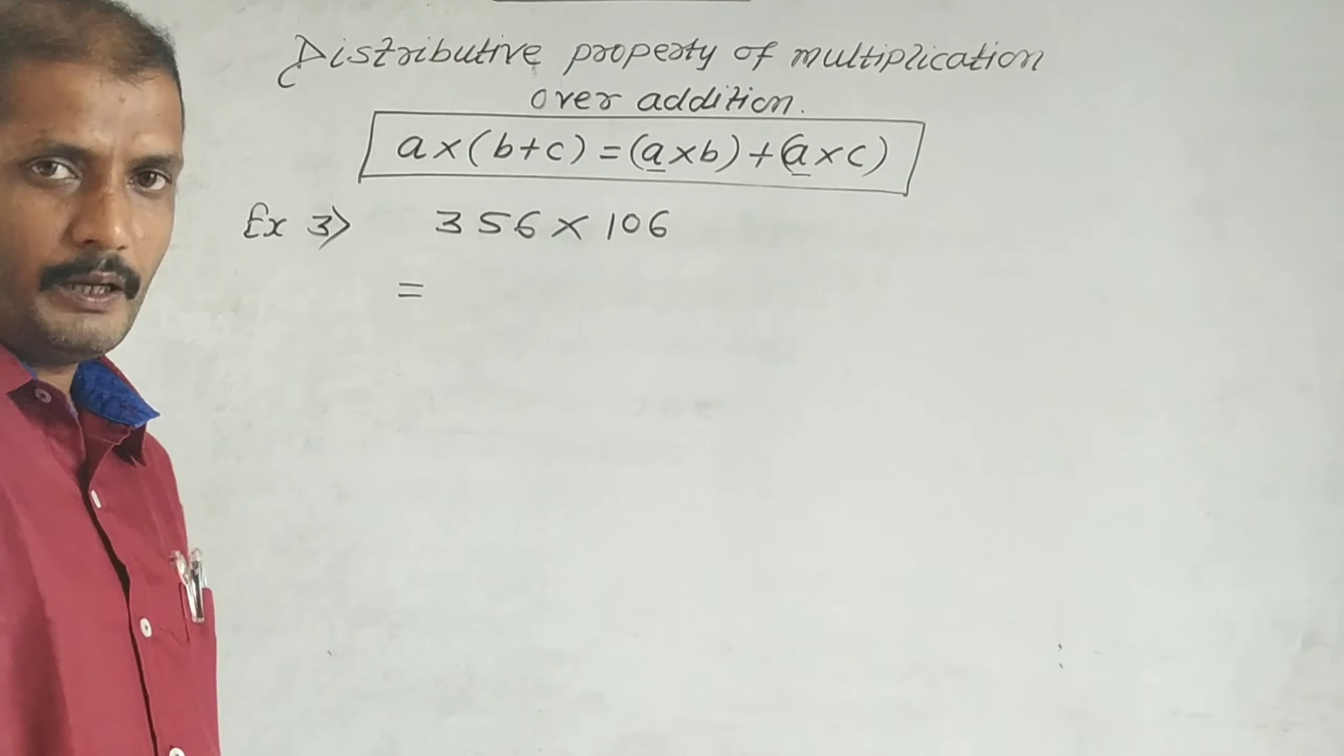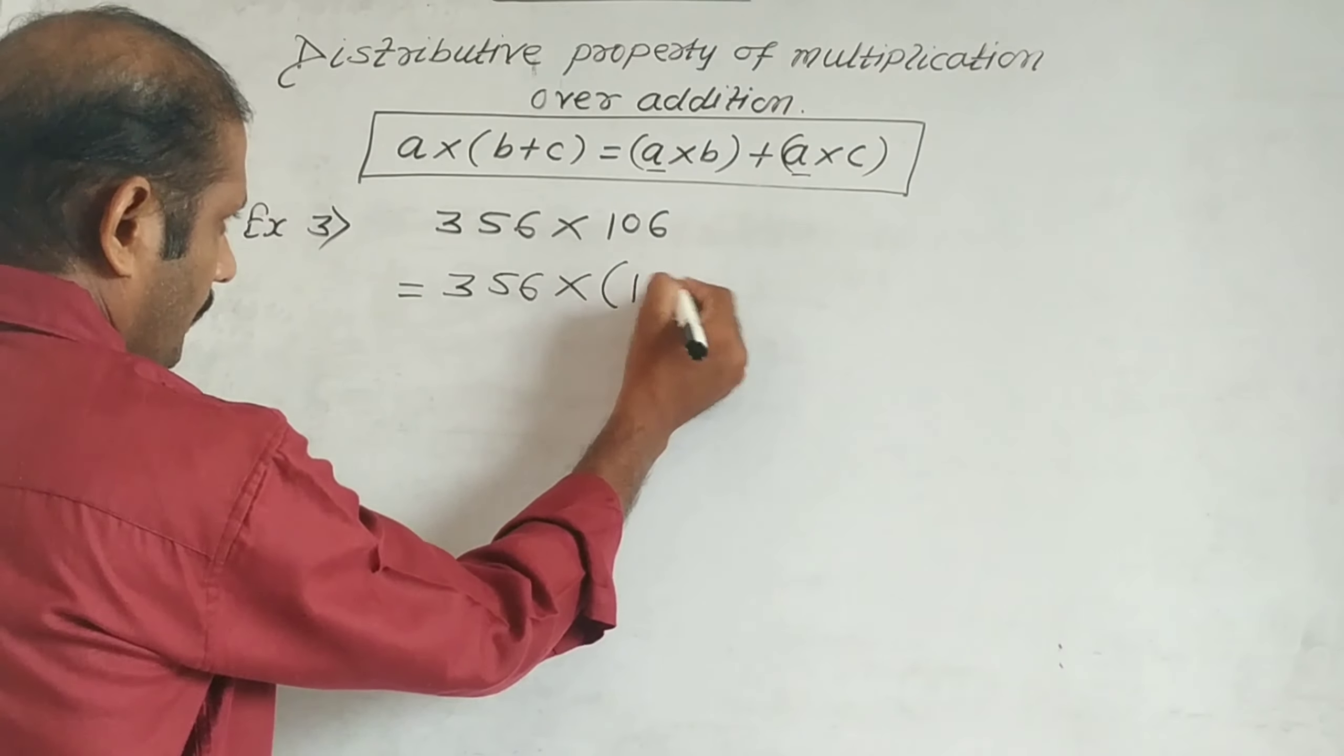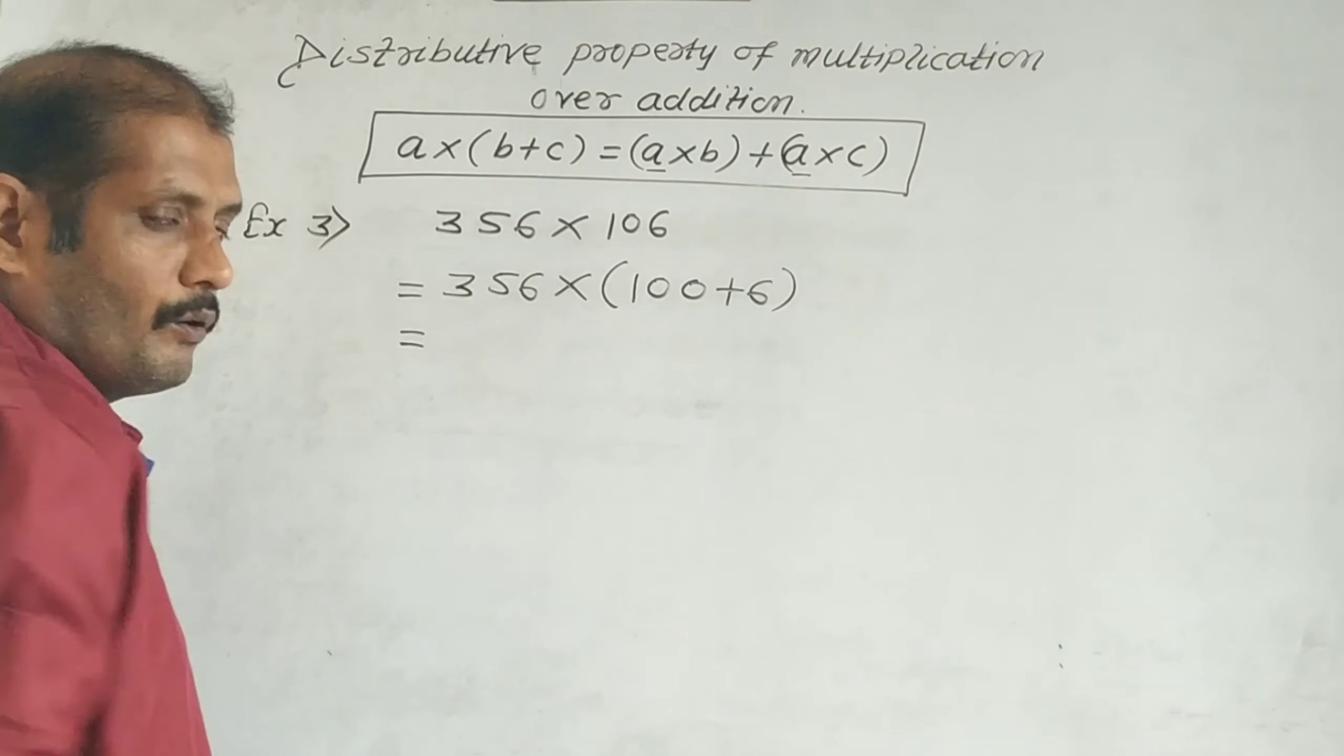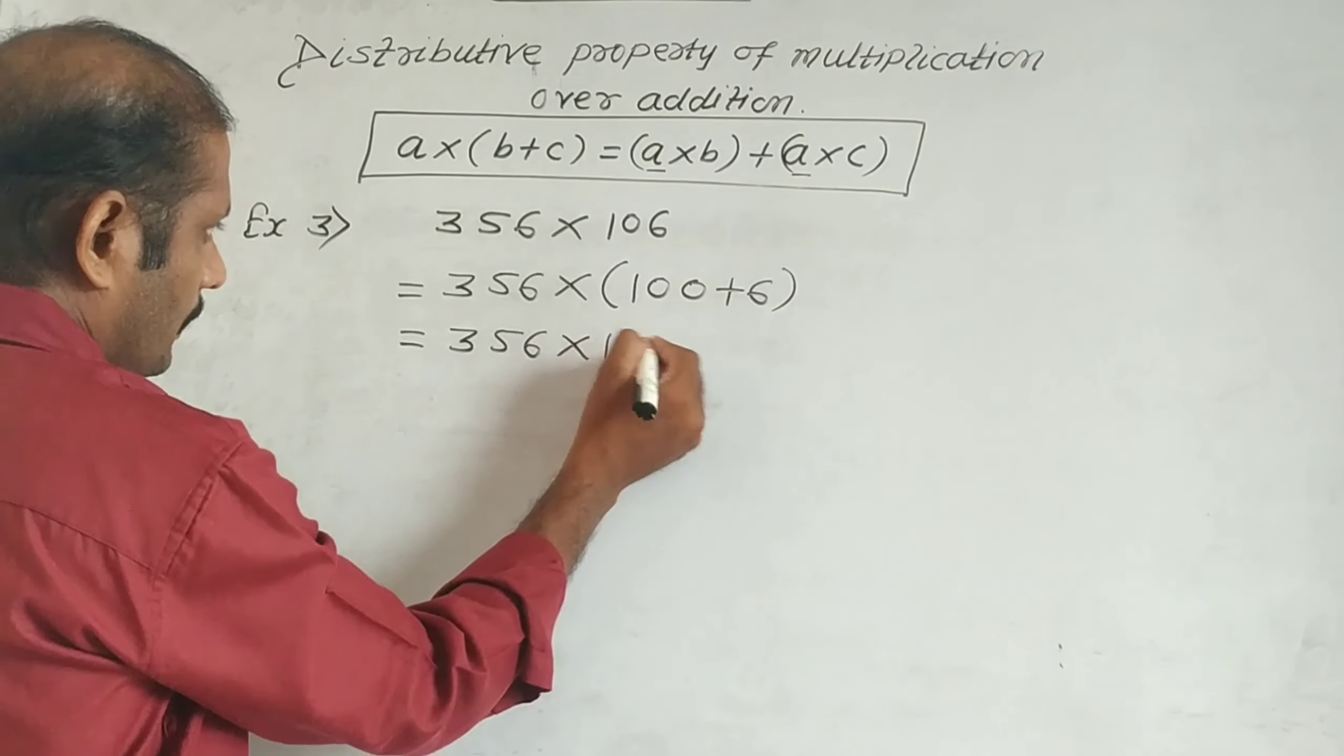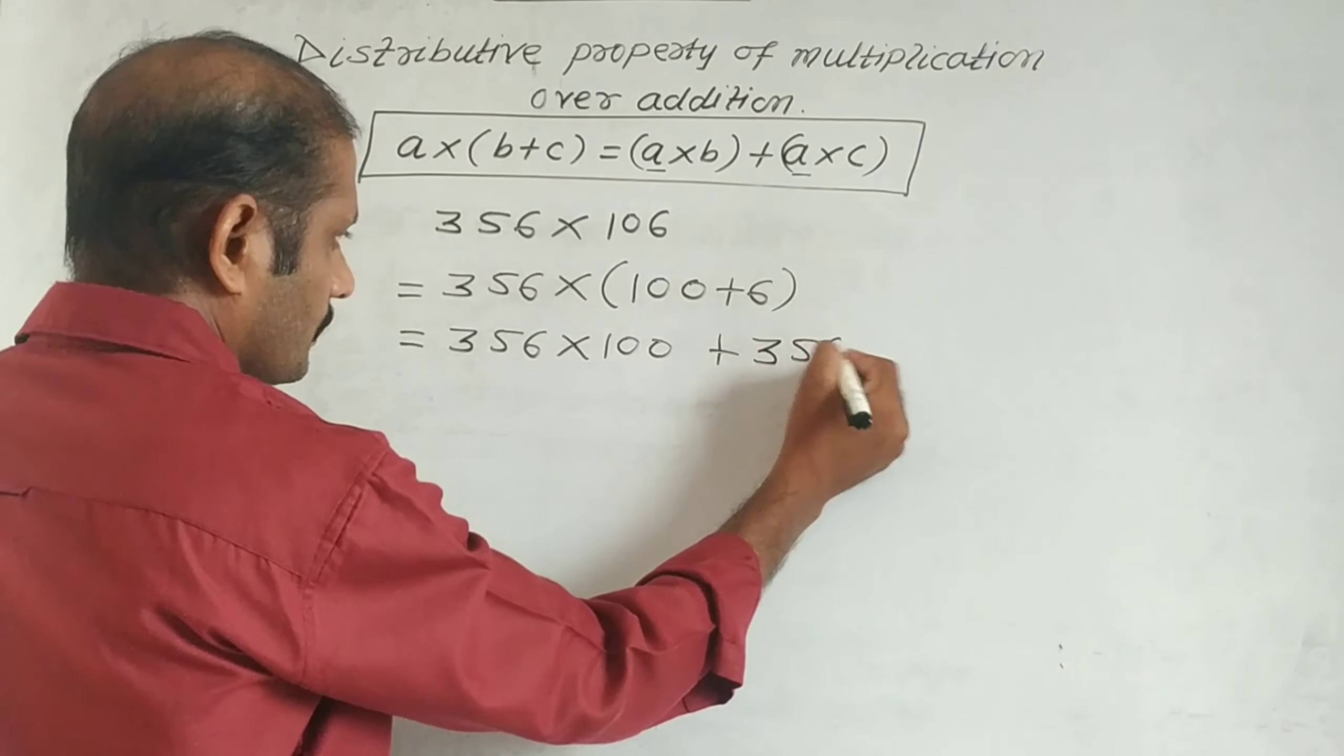We need to write 106 in the form b + c, which is 100 + 6. So 356 as it is, multiplied by 106, which is 100 + 6. This equals... Now multiply the outside number with each number in the bracket.